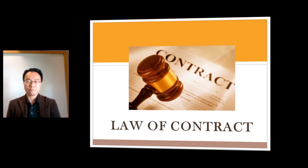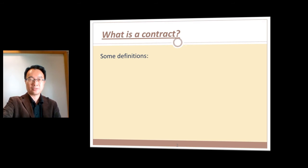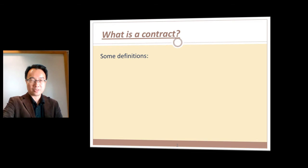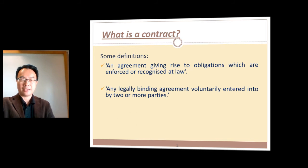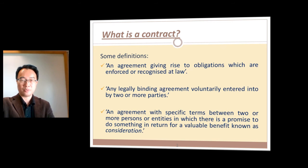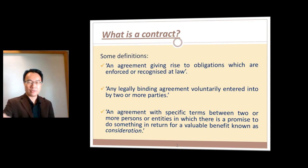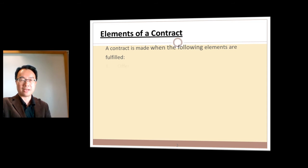Hi, this is the e-learning for Law of Contracts, which is part of your business environment. Let's look at what a contract is and we're going to start out with some definitions. It's an agreement giving rise to obligations, it's a legally binding agreement, and it's an agreement with specific terms between two persons. But what you really want to know is what you need in law to have a valid contract.